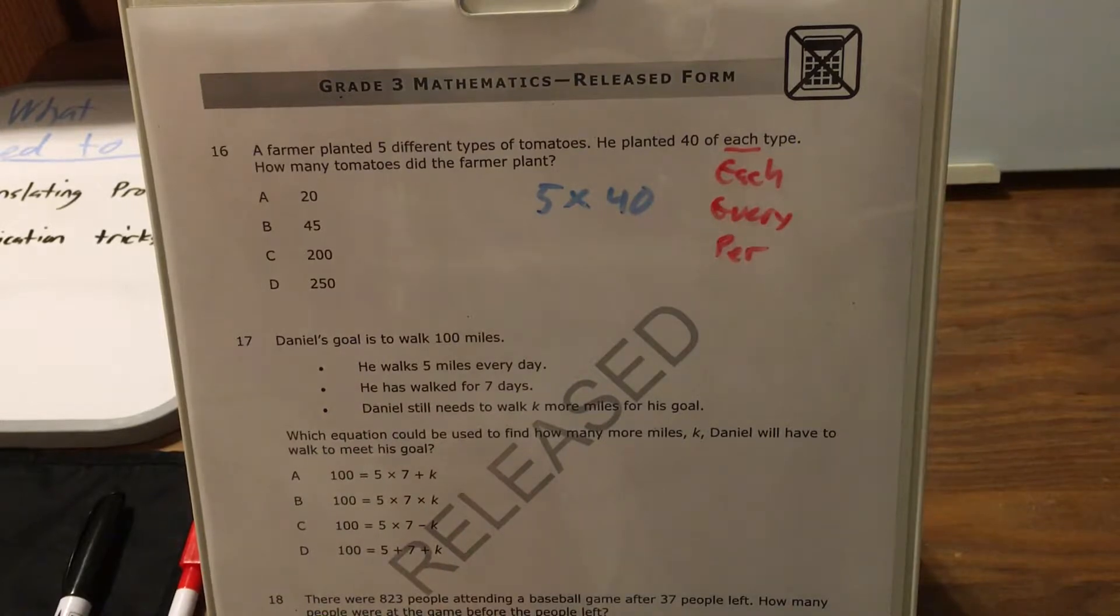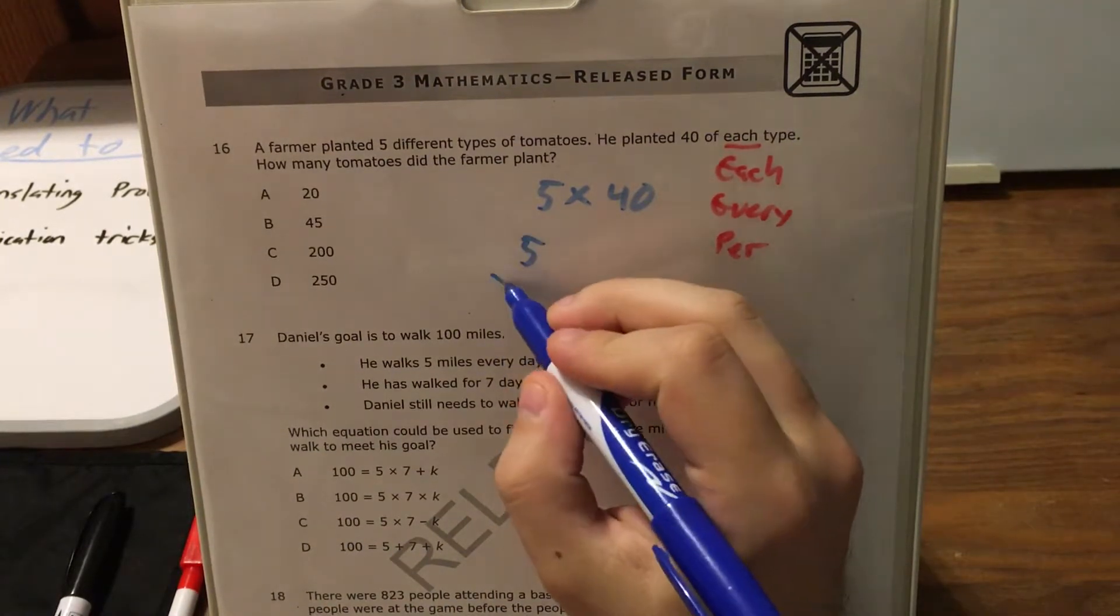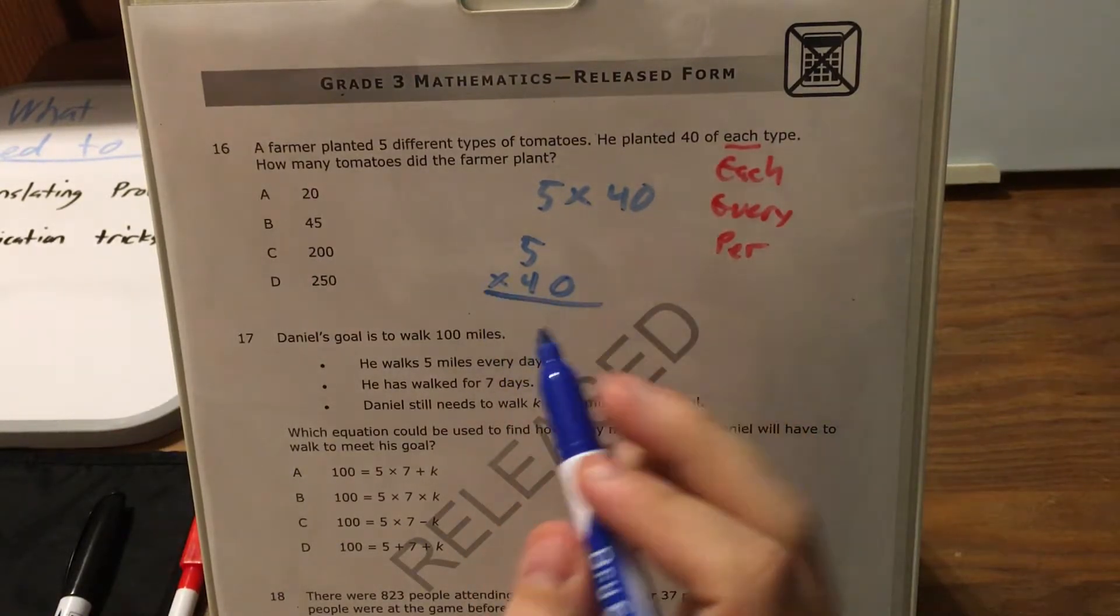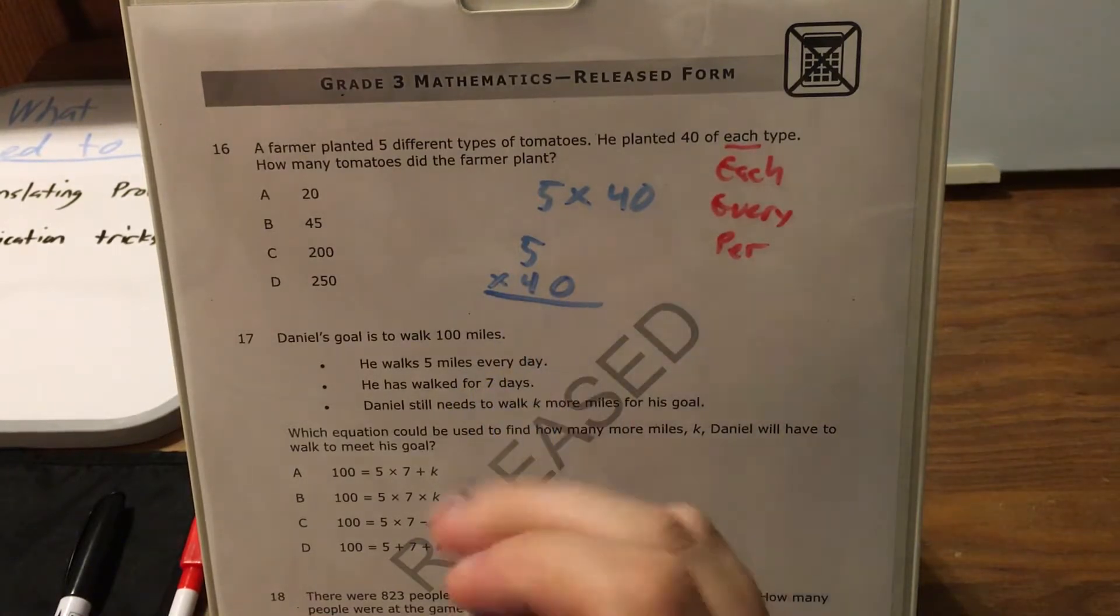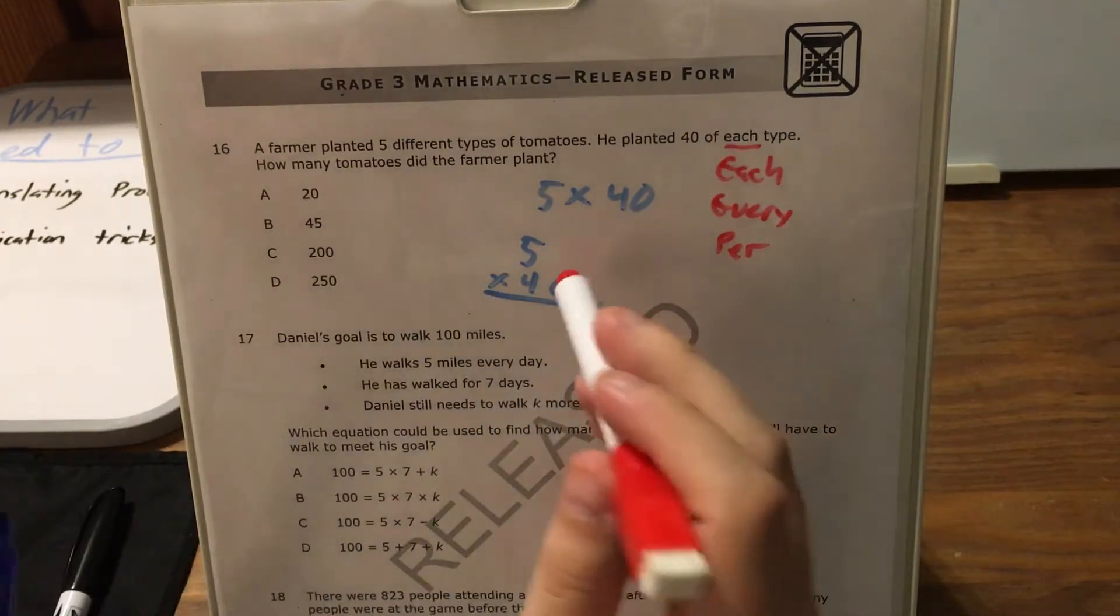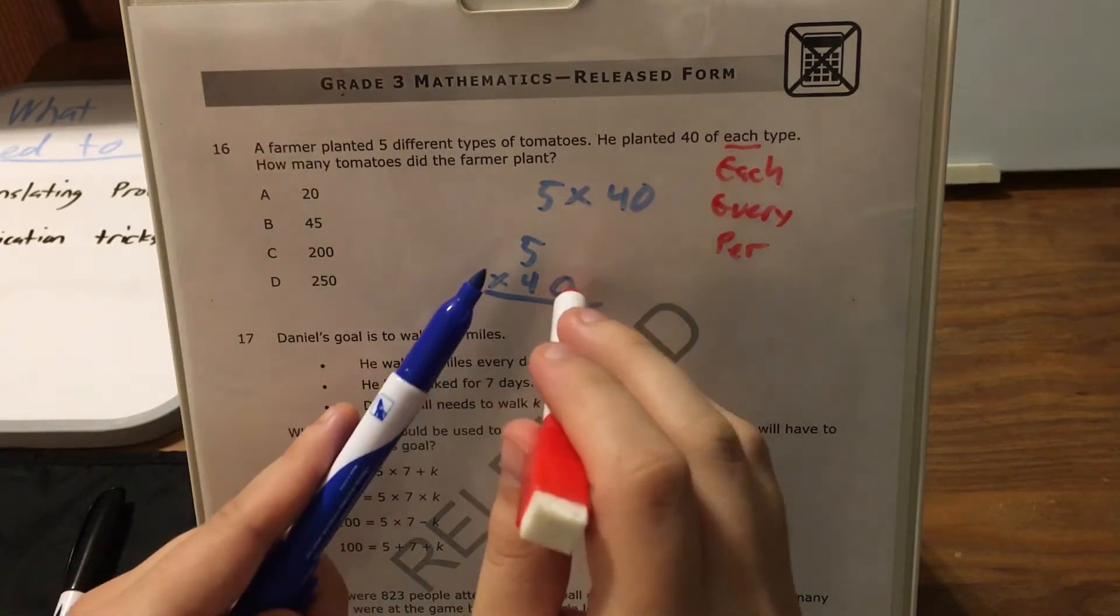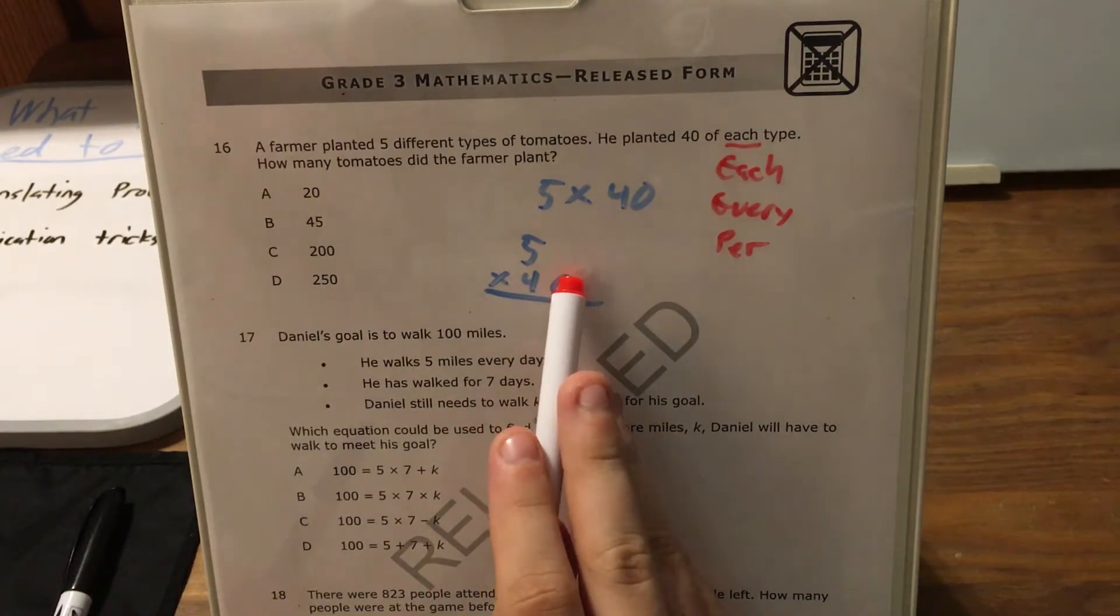So if we're going to multiply 5 times 40, I'm going to go ahead and set this up vertically. 5 times 40, I'm going to write my zero over to the side here, because the nice thing about multiplying by tens is that we can actually just ignore this zero for right now, and just stick with 5 times 4 and tack the zero onto the end once we're done with that.